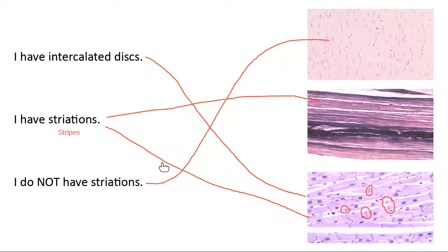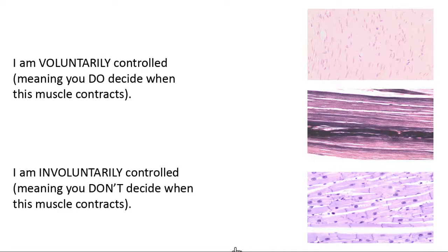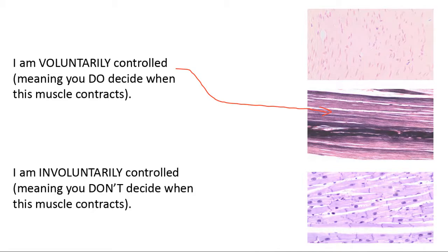Another important feature of our types of muscle tissue is whether or not you decide when they contract. The kind of muscle tissue you decide when it contracts is skeletal muscle — that's actually the only kind you get to decide. That's why you can do a bicep curl, or, let's be real, that's why we can lay down in bed at the end of the day.